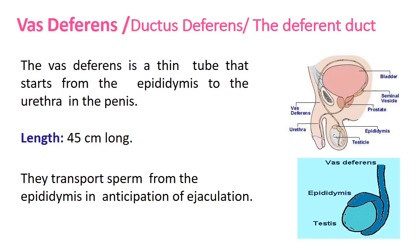The vas deferens, also called the ductus deferens or deferent duct, is a thin tube approximately 45 cm long that runs from the epididymis to the urethra in the penis. It transports sperm from the epididymis in anticipation of ejaculation. So the pathway is: seminiferous tubules produce sperm → stored in epididymis → transported via vas deferens.